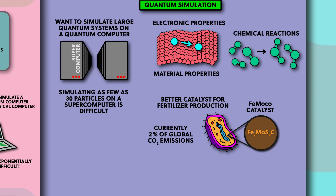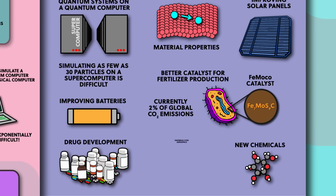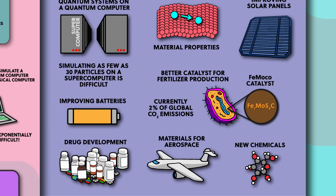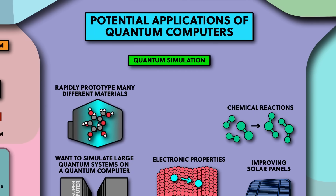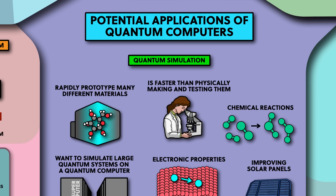Other potential applications of quantum simulation include improving solar panels, improving batteries, developing new drugs or chemicals, or materials for aerospace. In general, quantum simulation would mean that we'd be able to rapidly prototype many different materials inside a quantum computer and test all of their physical parameters, instead of having to physically make them and test them in a lab, which is a much more laborious and expensive process. This could be a lot faster and save a huge amount of time and money. But it's worth reiterating that all of these are potential applications of quantum computers, because we don't have any quantum computers that can solve real-world problems better than our normal computers yet.